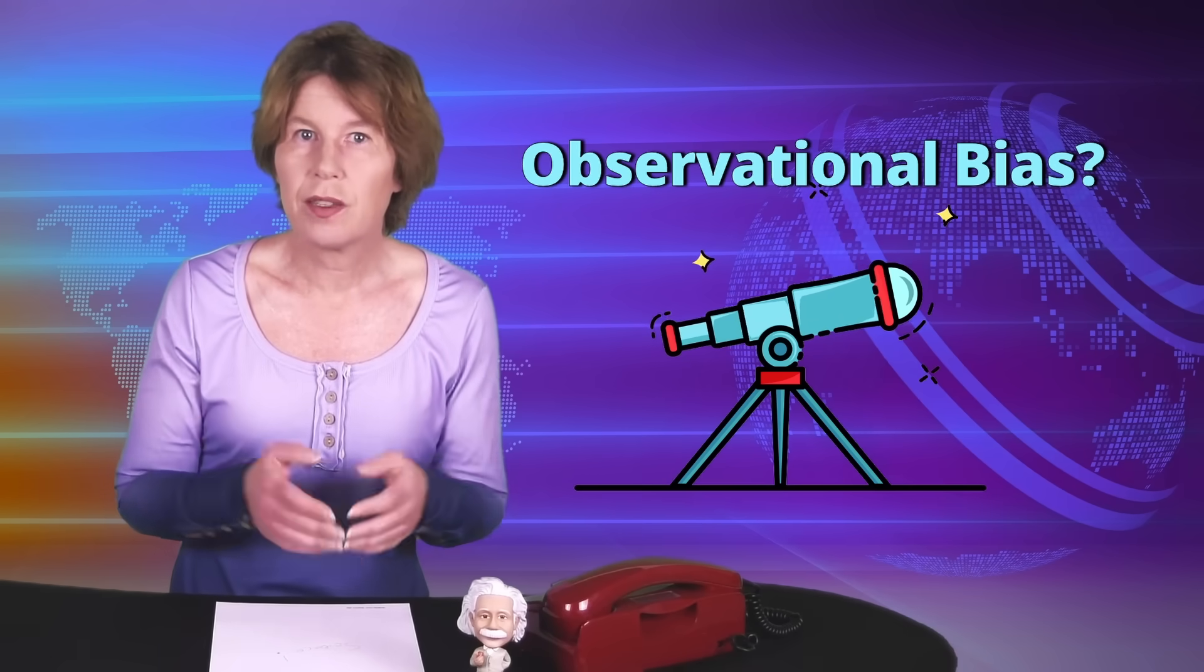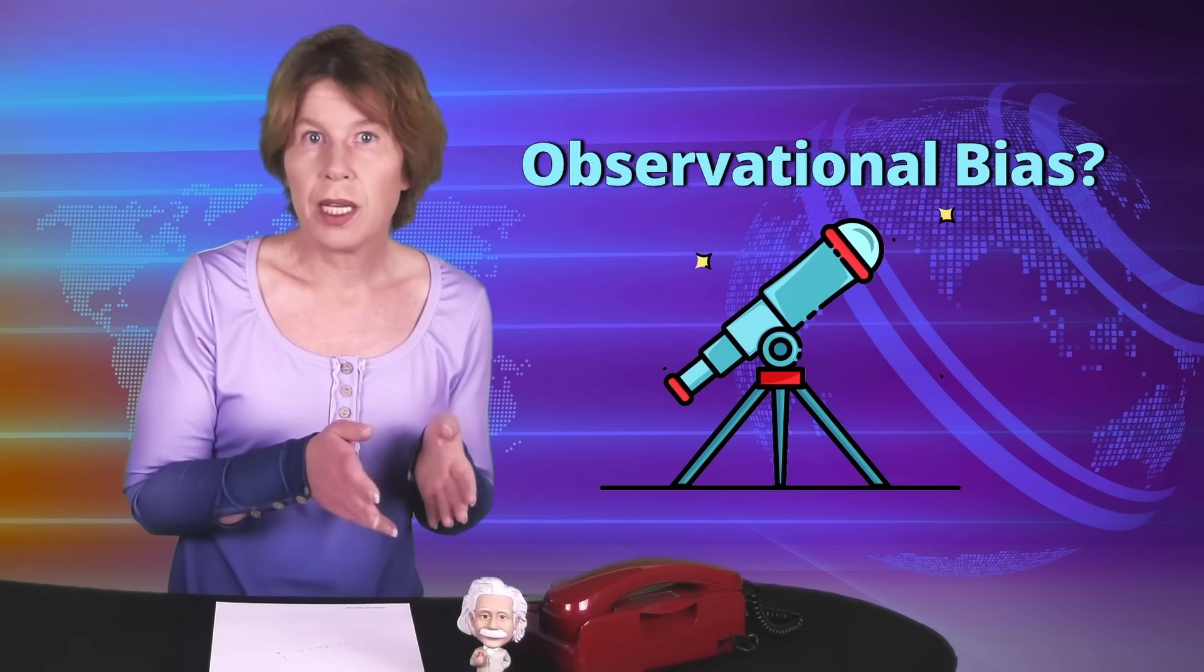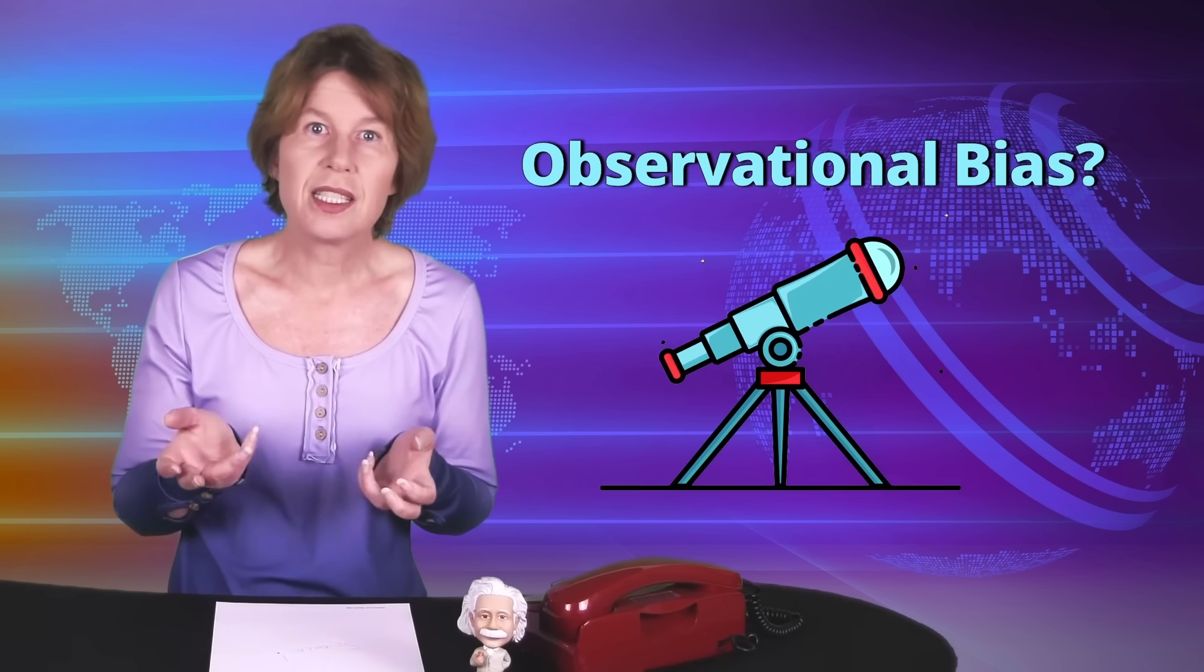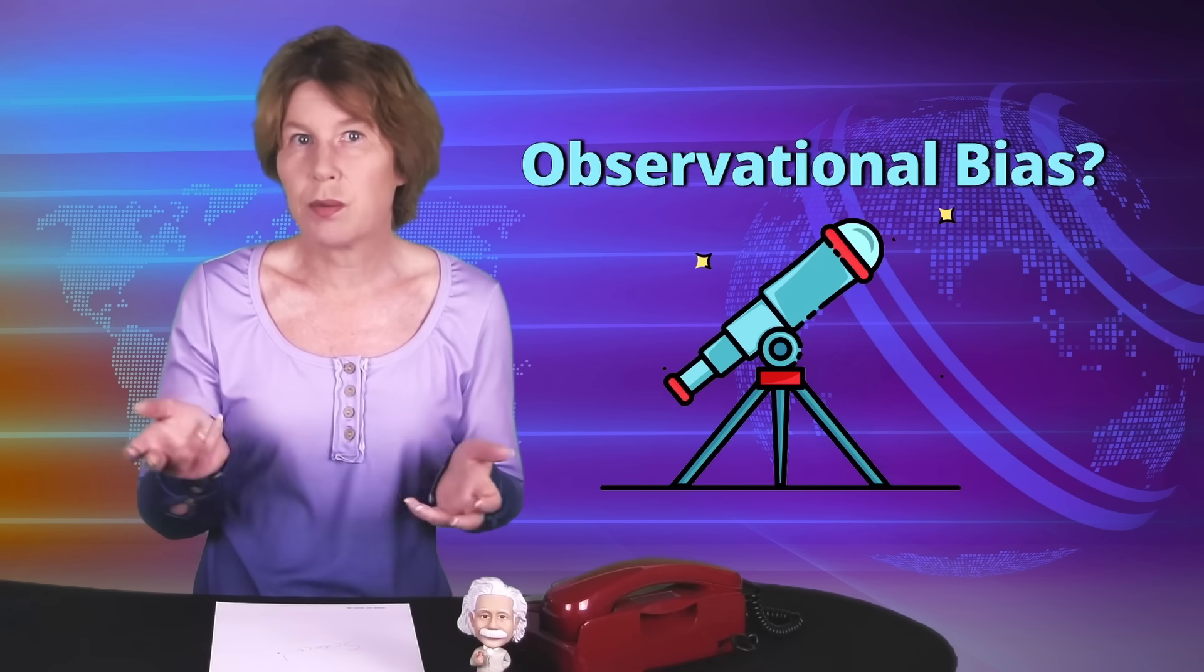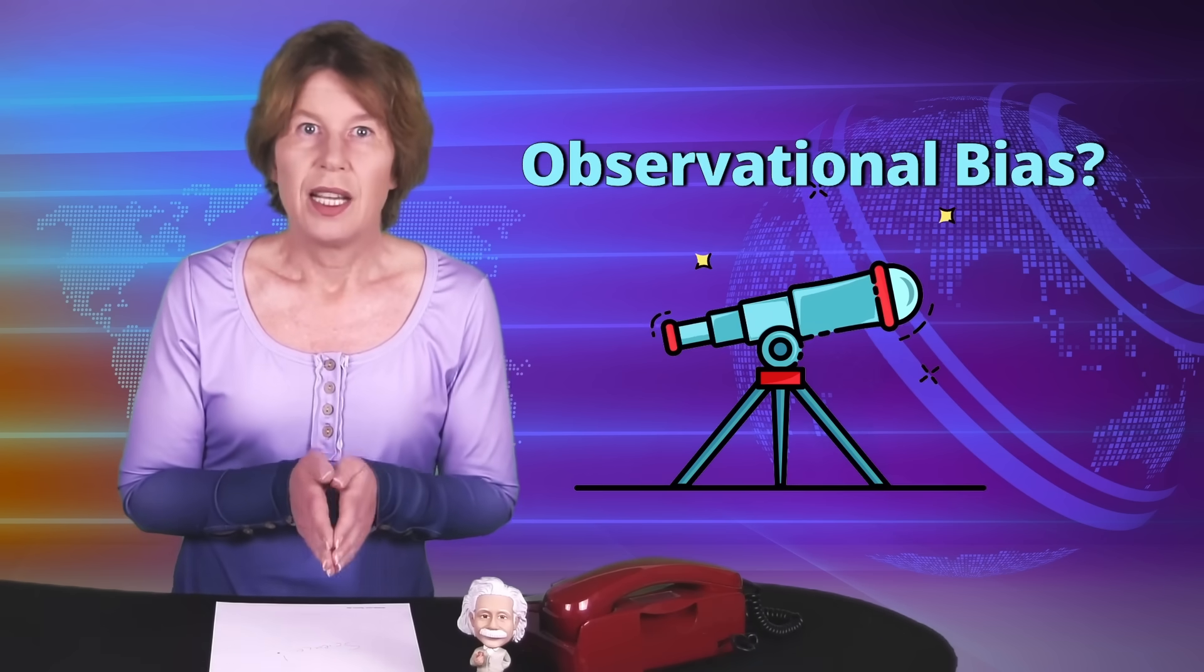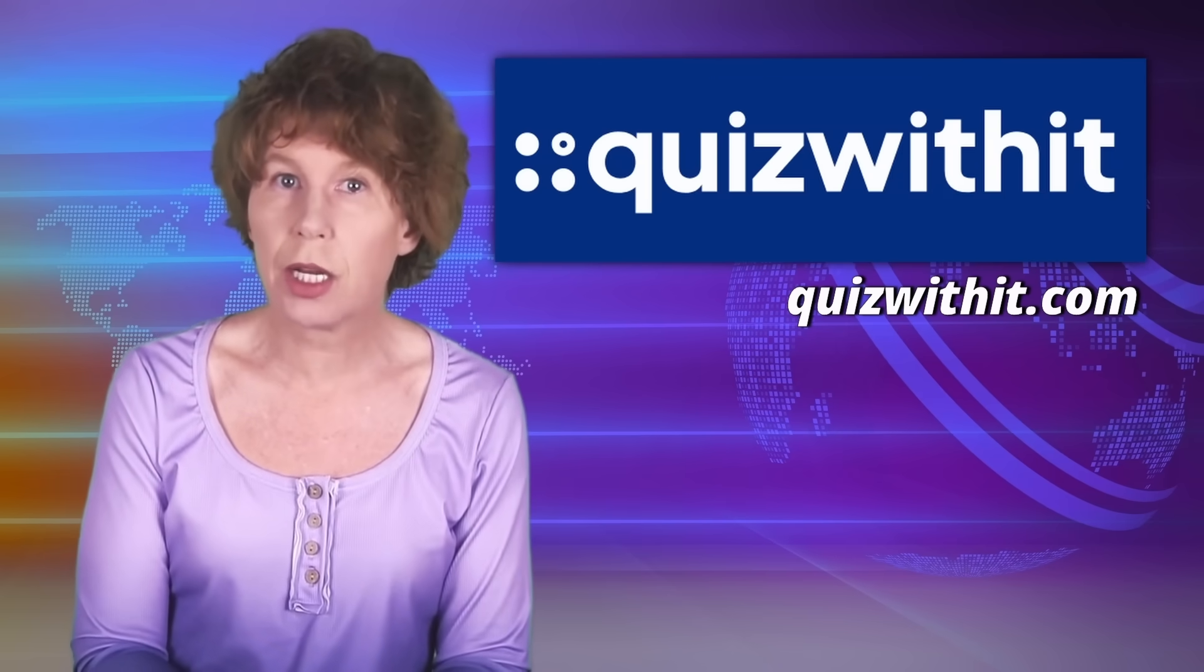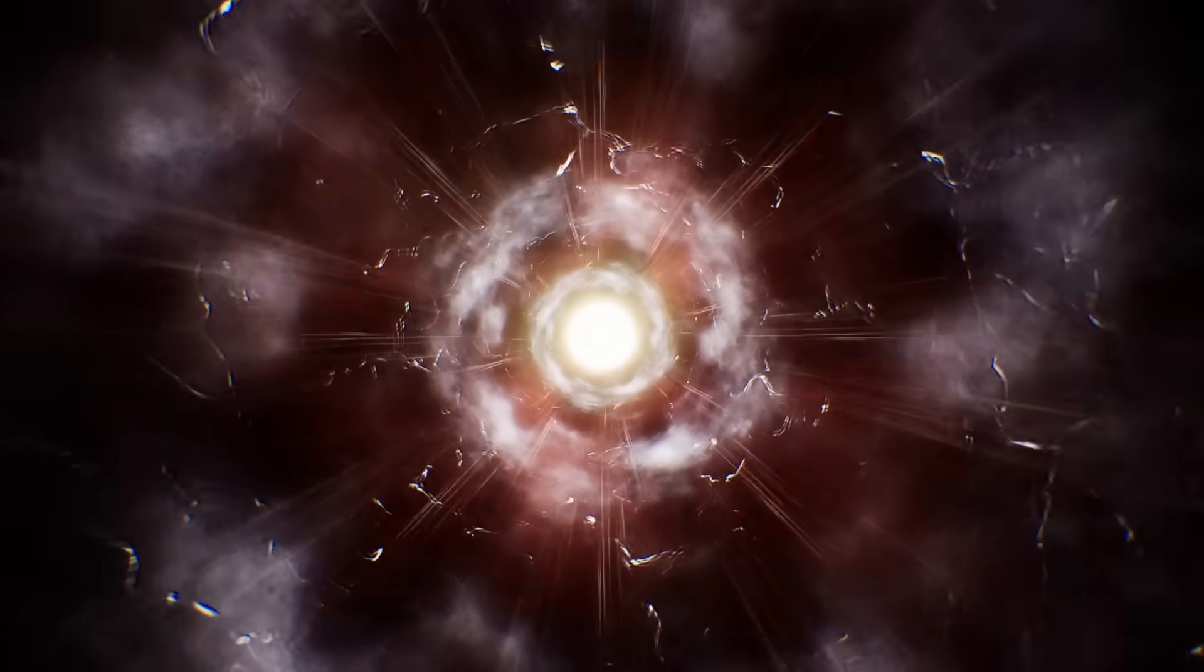There's also the possibility that this observation has something to do with us rather than with the galaxies. That is, maybe it's for some reason easier to observe galaxies that spin one way rather than the other. But there's no good explanation for that. And again, that other measurements with different instruments found similar things makes that somewhat implausible. If you've already forgotten half of what I said, this video comes with a quiz that lets you check how much you remember. Then what could explain it?